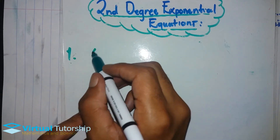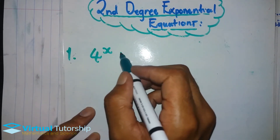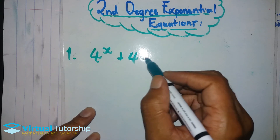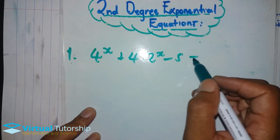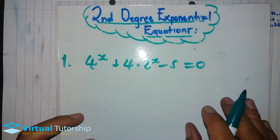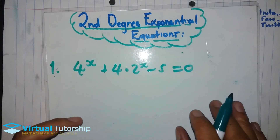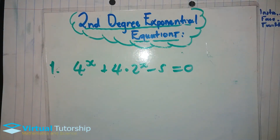Now let's take example four: 4 times 2 exponent x minus 5 equals zero. Just pause the video for a few minutes and then we will solve the problem. We will compare the answer.